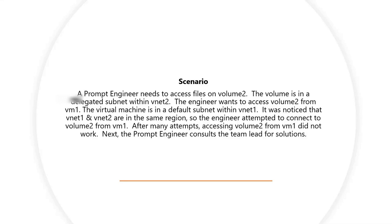Consider this: a prompt engineer needs to access files on volume 2. The volume is in a delegated subnet within vNet2. The engineer wants to access volume 2 from VM1, which is in a default subnet within vNet1. It was noticed that vNet1 and vNet2 are in the same region, so the engineer attempted to connect to volume 2 from VM1, but after many attempts it did not work.